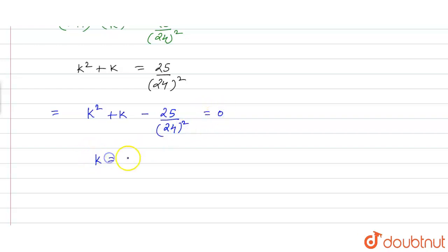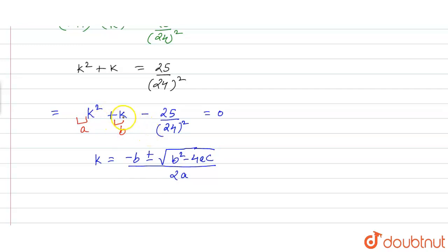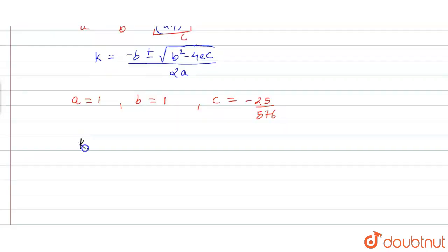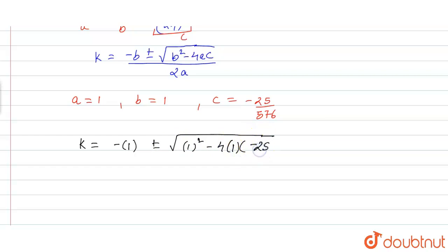The value of k will be equal to minus b plus minus under root b square minus 4ac upon 2a, where a is the coefficient of k square, b is the coefficient of k, and c is the constant. So from here, a is equal to 1, b is equal to 1, and c is equal to minus 25 upon 24 square, which is minus 25 upon 576.